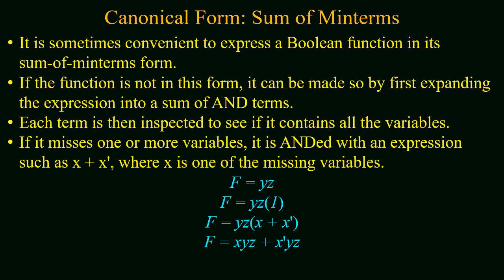Expressing a boolean function in the form of sum of minterms is more convenient. If the given function is not in the sum of minterms form, it can be transformed by first expanding the expression into a sum of AND terms. Then each of the AND terms is inspected to check whether it contains all the function variables or not. If any variable is missing, the missing variable is introduced using boolean rules.